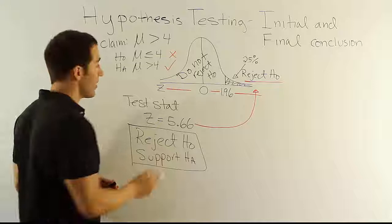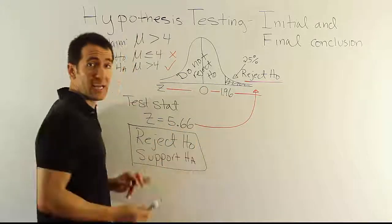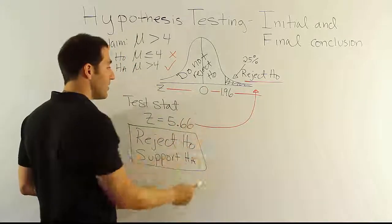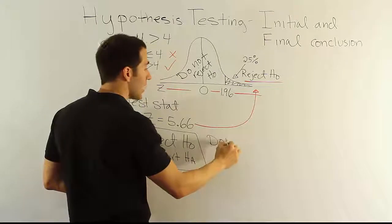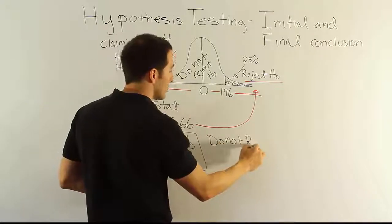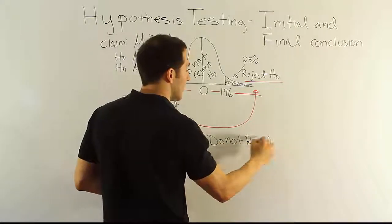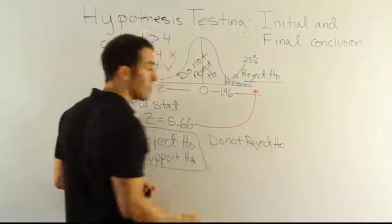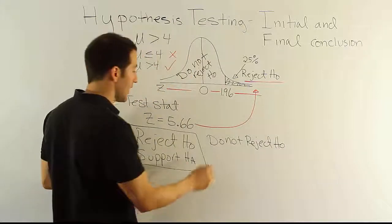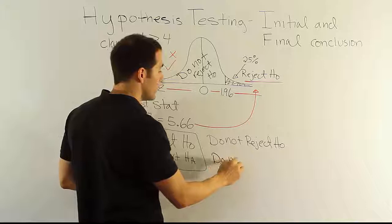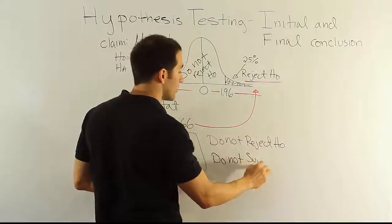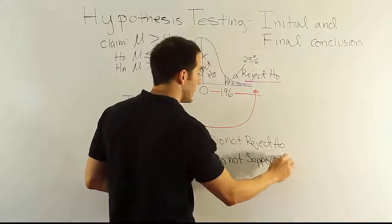We could have done something else though, right? That test stat could have landed in here. It didn't in this case, but it could have. If it did, we would have said do not reject H0, which would go with do not support HA.